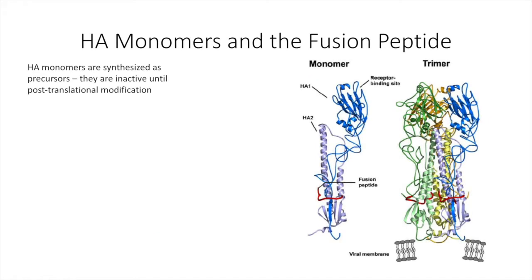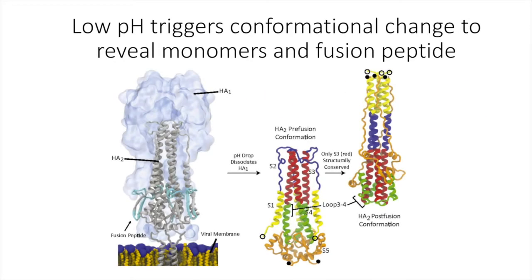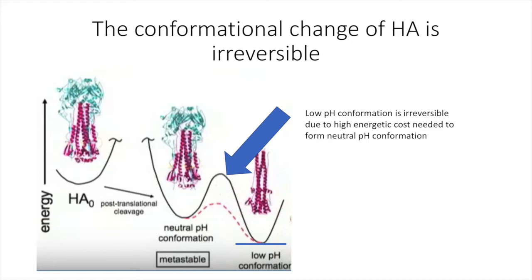The three monomers can be subdivided into two parts: HA1 and HA2. HA1 is the receptor binding site and HA2 forms the stalk of the virus. The receptor binding site is a very conserved feature of an otherwise antigenically variable surface. The end terminus of HA2 contains the fusion peptide, which is hidden within the three-fold axis of the trimer. The fusion peptide cannot interact with hydrophobic targets until exposed at low pH. Acidity, as within the endosome, allows the fusion peptide to emerge and interact with the target membrane. Low pH causes the trimer of hairpin conformations to fold inside out to reveal the monomers and fusion peptide.